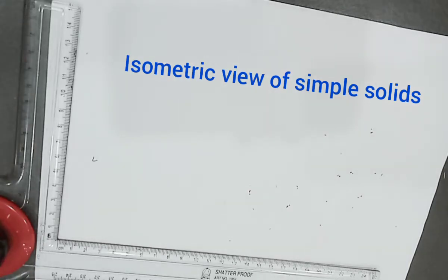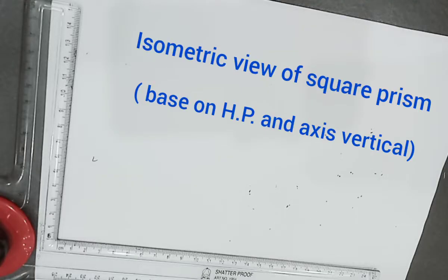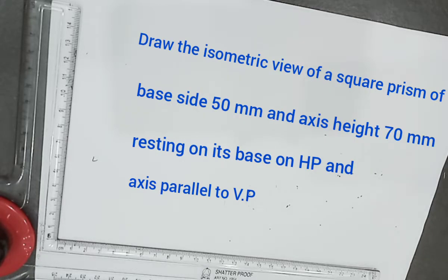Hi, welcome to the discussion of isometric view of simple solids. Under this we are discussing the construction of isometric view of a square prism. The given problem is a square prism of base side 50 mm and axis height 70 mm.